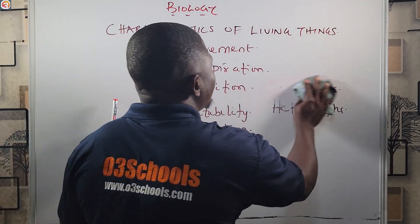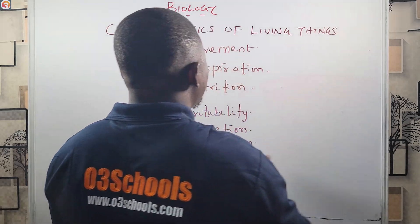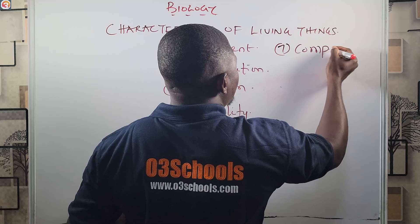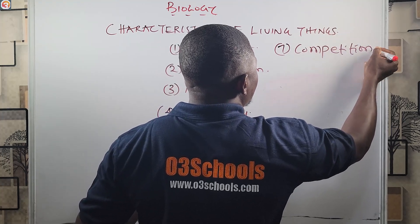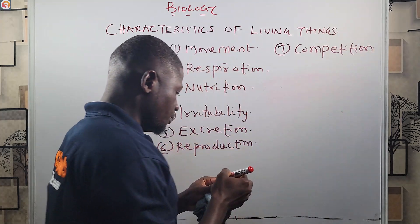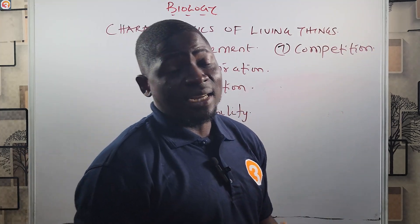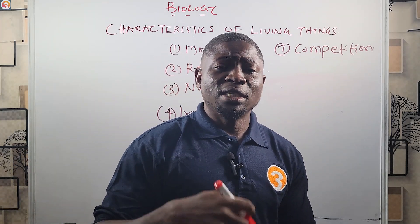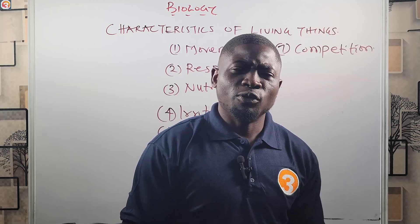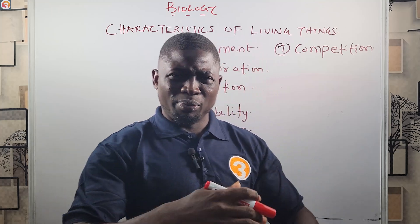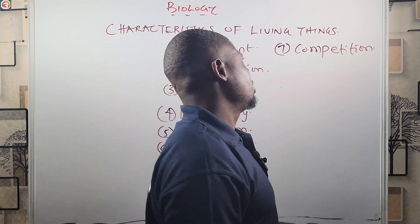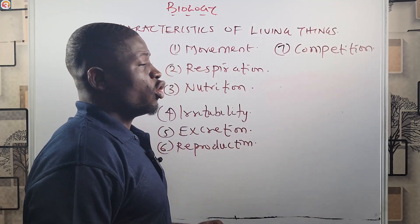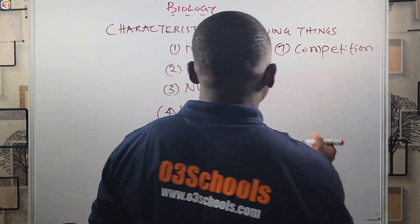Number seven is competition. Resources are usually scarce and limited in quantity, so living organisms compete for those scarce resources. Competition is therefore a characteristic of living things.